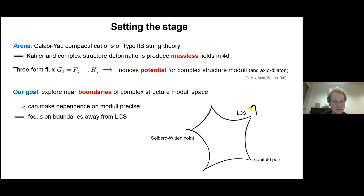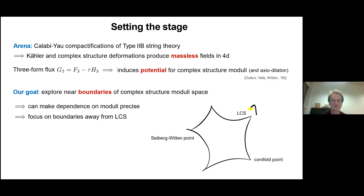What I'll be thinking about is how the stabilization of complex structure moduli actually works. For this we need to know very well how the scalar potential varies over the moduli space. When we are in the bulk of the moduli space, this dependence is very complicated — you can have transcendental functions and all kinds of nasty exponentials that you need to deal with.